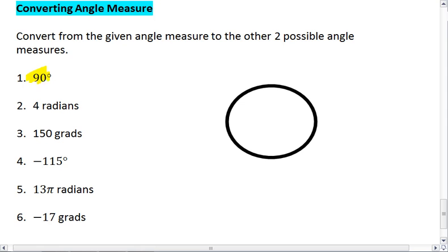For example, if I'm in 90 degrees, I know I have 90 out of a total 360, which means I have one fourth of my circle.